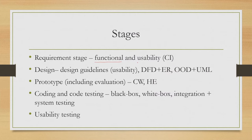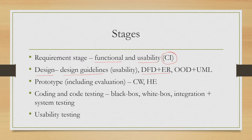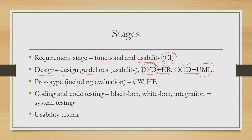In the requirement stage, we collect functional and usability requirements. Usability requirements are collected through several methods — one method we discussed is contextual inquiry. In the design phase for interface design, we may follow design guidelines to ensure usability. For system design, we may follow a functional approach with DFD as the language to express the design, or object-oriented design with UML. In the prototype stage, we covered several ways to create prototypes and evaluate them quickly using cognitive walkthrough or heuristic evaluation methods.